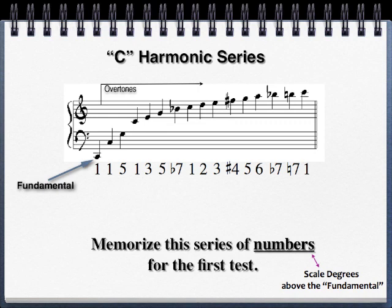This overtone series is really important in music, because it's upon this fact of physics that our whole music system — scales, chords, and everything — is built. The most recurring number is one, and that's why the first note of the scale is most important. The second most recurring note is five, and that's why the fifth note of the scale is so important. You'll learn more as the semester goes on.